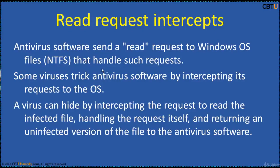Anti-virus software sends a read request to Windows OS files that handles its request. Some viruses trick anti-virus software by intercepting its request to the operating system. A virus can hide by intercepting the request to read the infected file and handling the request itself, returning an uninfected version of the file to the anti-virus software.